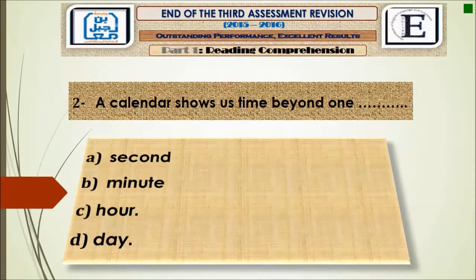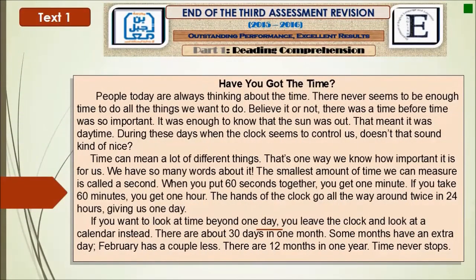Question number two: A calendar shows us time beyond one what — a second, a minute, an hour, or a day? We have to look again at the text. It is clear in the third paragraph: 'If you want to look at time beyond one day, you leave the clock and look at a calendar instead.' So the answer is day.